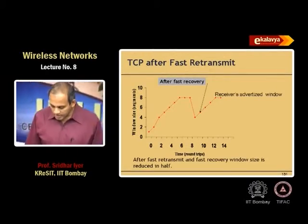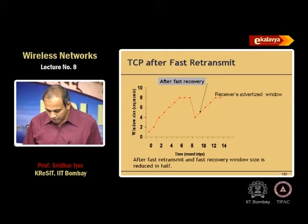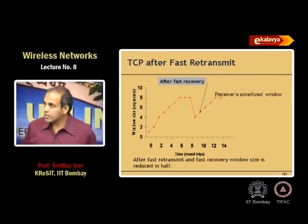Fast retransmit happens when the receiver gets out-of-sequence packets. If packets 1, 2, 4 are received but not 3, the receiver sends duplicate ACKs quickly to signal the sender that an intermediate packet has not arrived. This is less severe than a full timeout. In this case, instead of dropping the window all the way, TCP drops it only to half the current value and enters the linear increase phase directly.